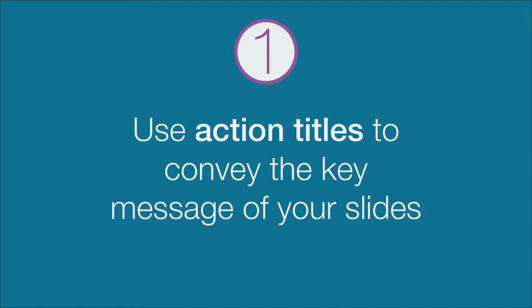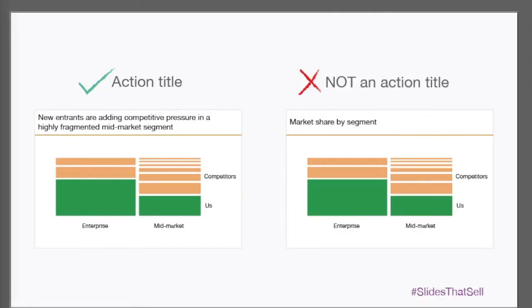Tip number one: use action titles to convey the key message of your slide. Most PowerPoint slide titles tend to describe the contents of the slide rather than the takeaway message. This is a problem since your audience's attention is highest when they're reading the first item of your slides. Action titles spell out the "so what" of the slide rather than a written description of the content. The audience should only need to read the action title and not the rest of the slide to understand what the primary message is.